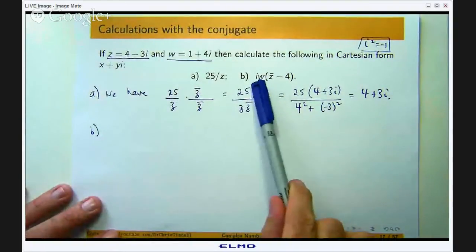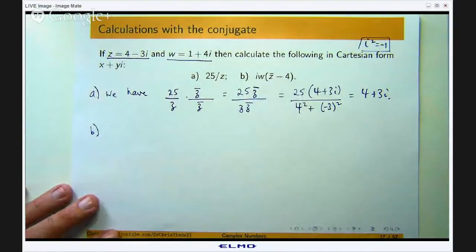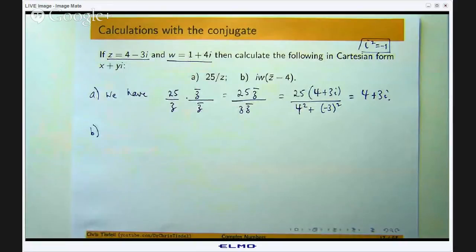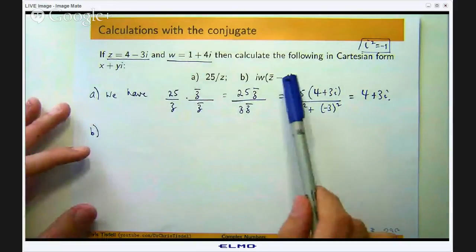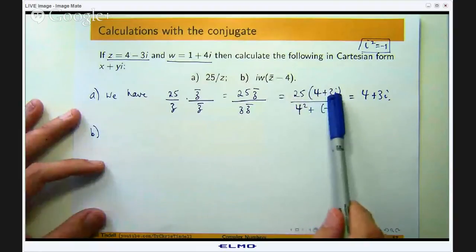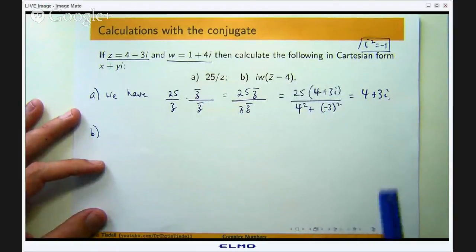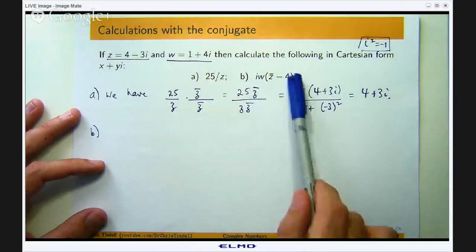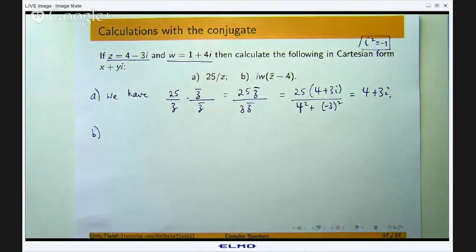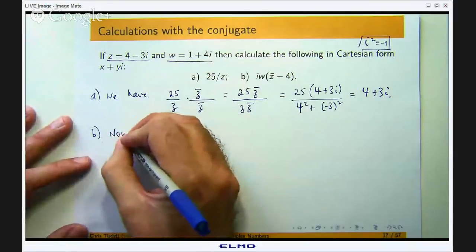In the second part we have got i times w times all of Z bar minus 4. Now Z bar as we found up here is 4 plus 3i. If I take away 4 from that I am going to get just 3i. So this whole calculation hopefully will simplify nicely.